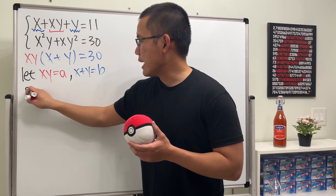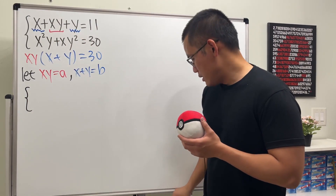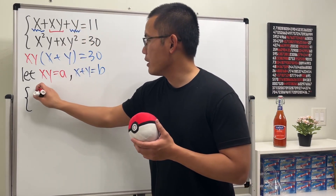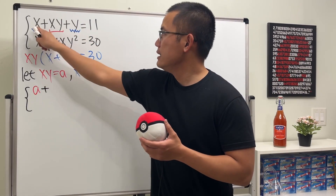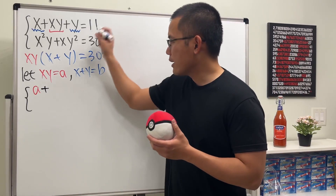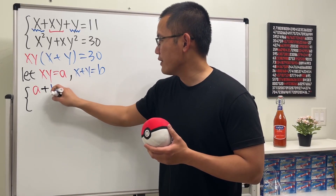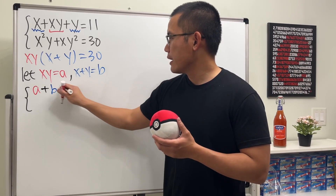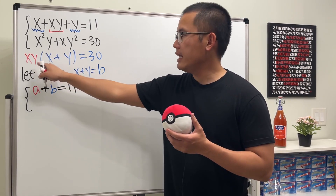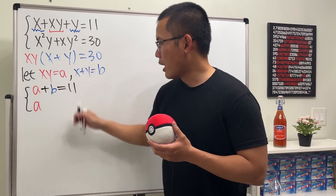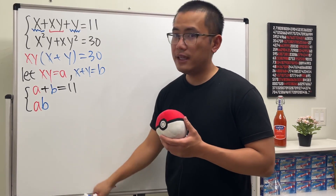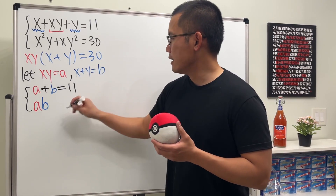So if you take a look at these equations now, the first one can be written as: we have 'a' right here, and then we just have to add 'b', and that will be equal to 11. And secondly, we have 'a' and also 'b', and this time it's multiplication — so we have a times b equal to 30.